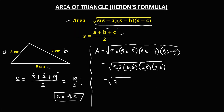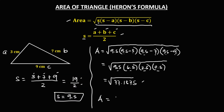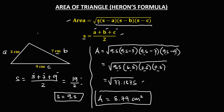So we have 77.1875. To solve for the area, we take the square root of 77.1875, which equals 8.79. So the area is 8.79 square centimeters. This is the area of the given triangle.